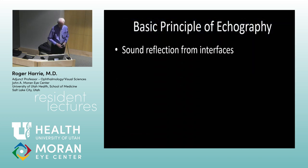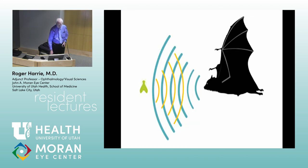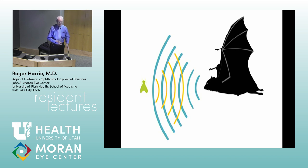Basic principles: sound reflections from interfaces — just like light is reflected, so is sound. A lot of the same principles apply. Snell's Law and similar concepts are followed by ultrasound reflections. A long time ago, bats discovered this same concept, and whales use it in nature all the time. Bats are incredible — most of them can't see, but they use sound to locate insects. Little tiny gnats they can pick up in the middle of the night just by ultrasound. So it's a powerful technique to localize.